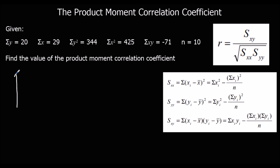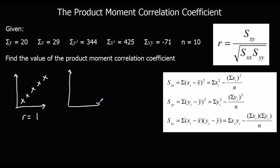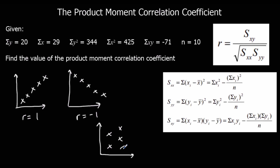On a scatter graph, a perfect straight line positive correlation means r is one. A perfect straight line negative correlation means r is negative one. And if there is no pattern at all — no relationship between x and y — then r is zero.